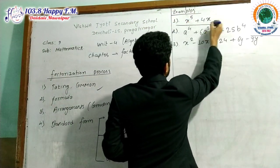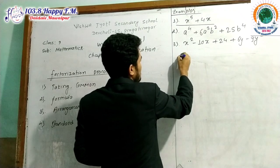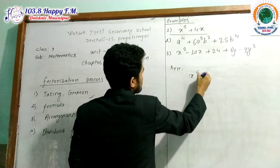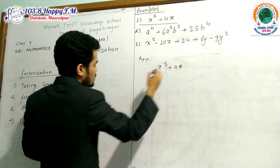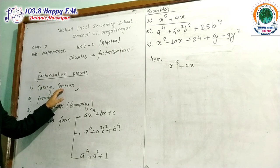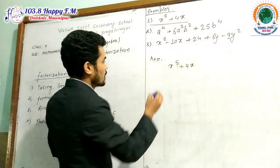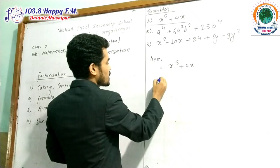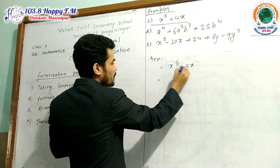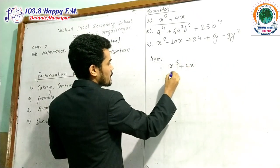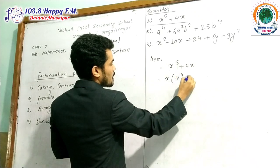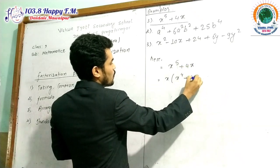Example number 1: x to the power 5 plus 4x. As you can see on the steps of factorization, the first step is taking common. We have x⁵ + 4x — what is common here? The x is common, so we take x as common. Then there remains x⁴, and since x is already taken as common, here remains only 4.